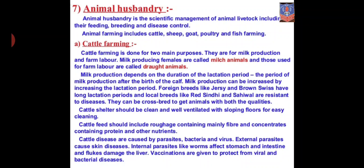In cattle farming, animals like cow and goat are managed for their milk and meat. Cattle farming is done mainly for two purposes: milk production and farm labor. Females producing milk are called milk animals, and those used for farm labor are called drought animals.